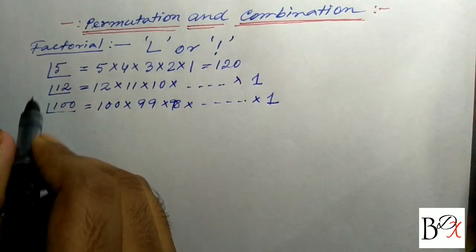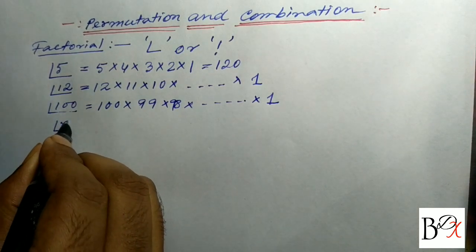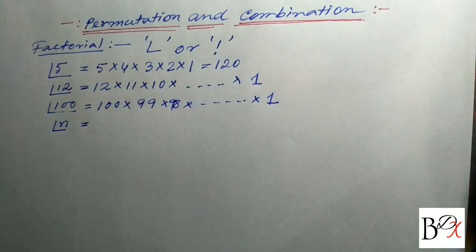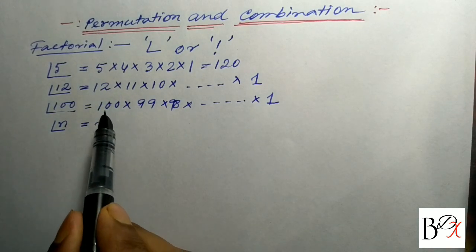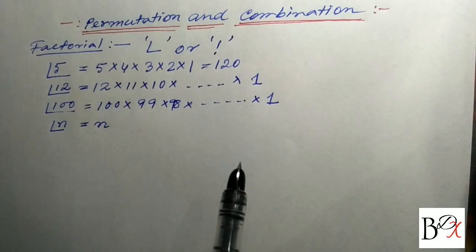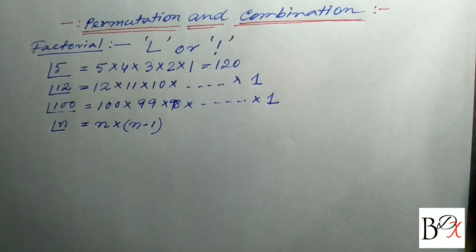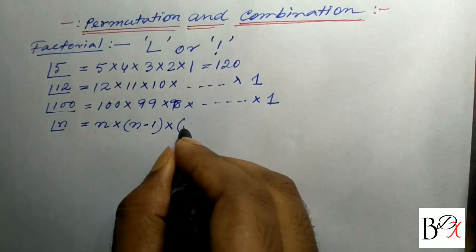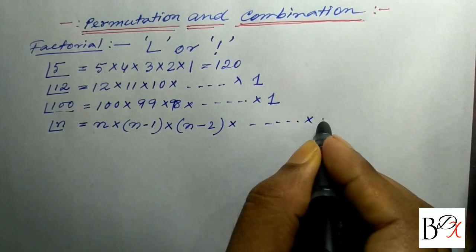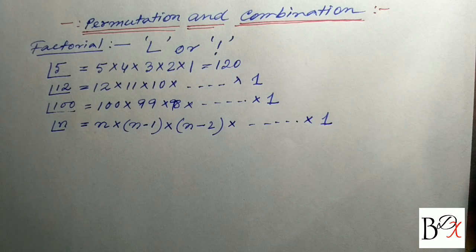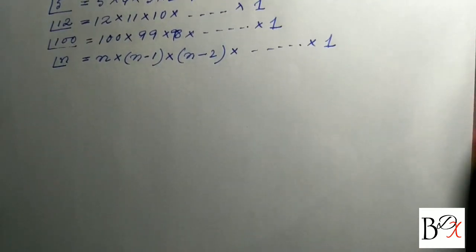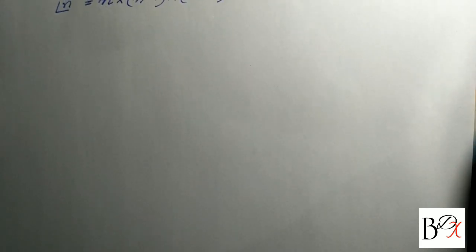Suppose I am going to write the general formula for factorial n. The general formula: n factorial is equal to n into (n minus 1) into (n minus 2) into dot dot dot up to 1. The first factor is n, the next is n minus 1, then n minus 2, and so on down to 1.